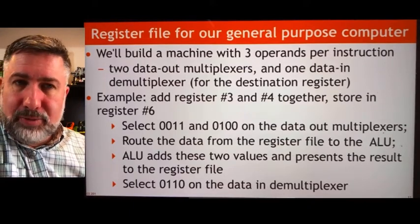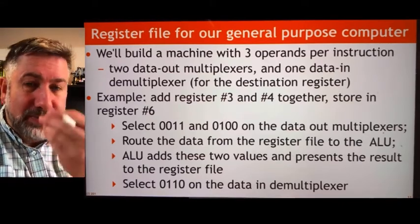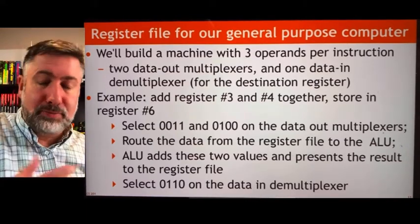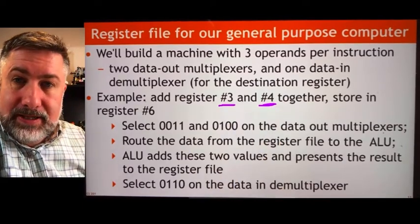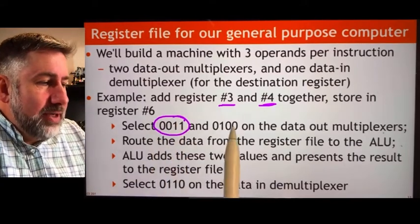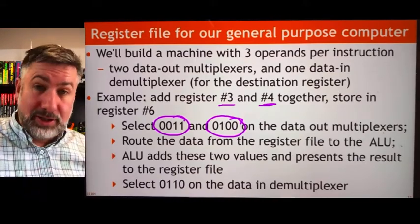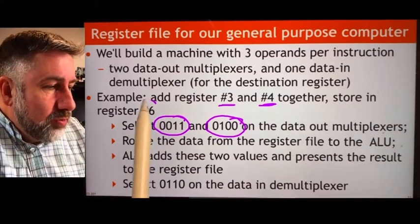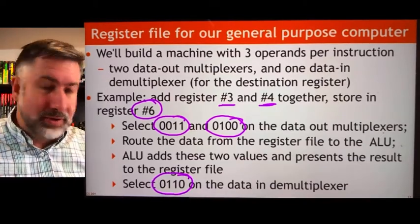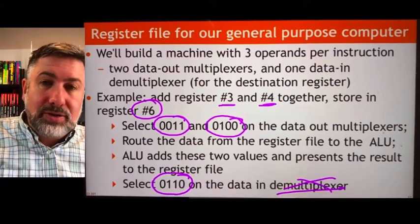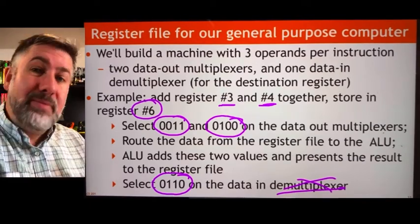We are building a machine that has three operands per instruction. We need two outputs from the register file and two selection addresses into the register file, and then one place to put the result back in. For example, if we wanted to add register three and four and store the result in register six, we provide a binary address of three and a binary address of four to the register file, get the contents of registers three and four, and then select register six on the decoder to store the result back into the register file to be used again later.